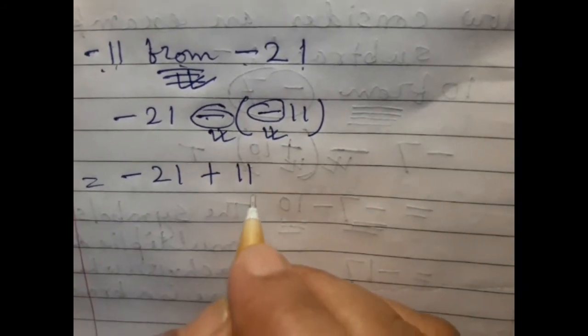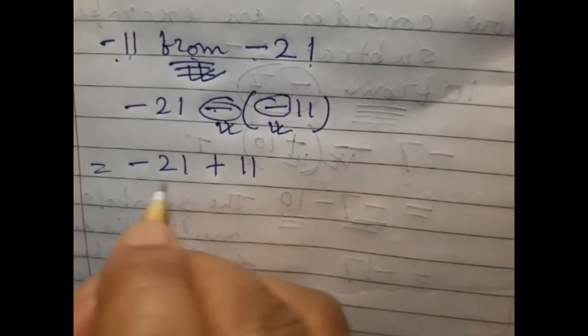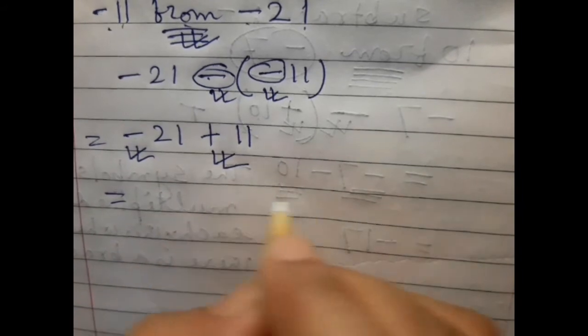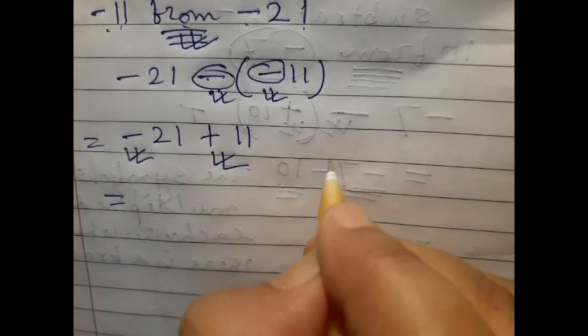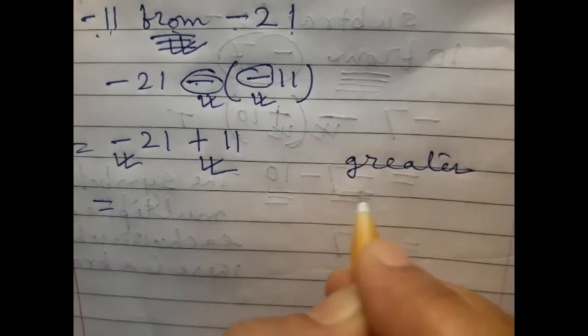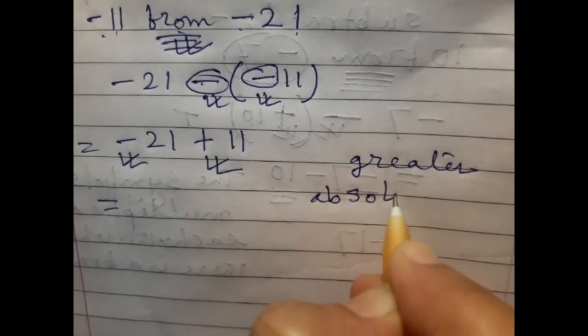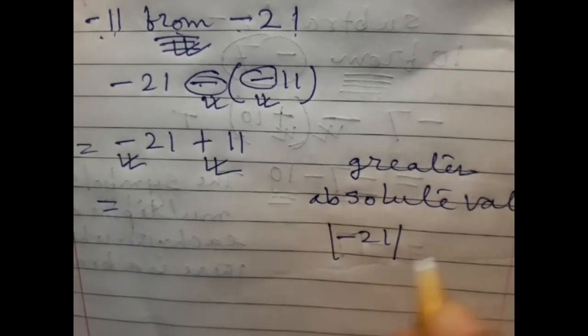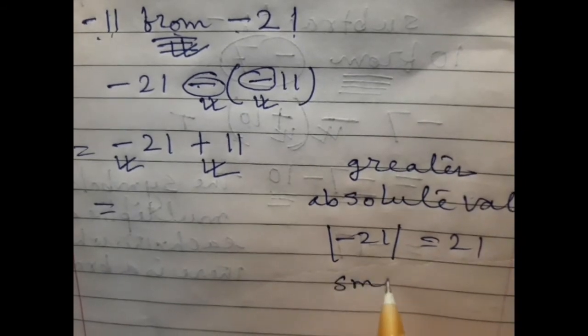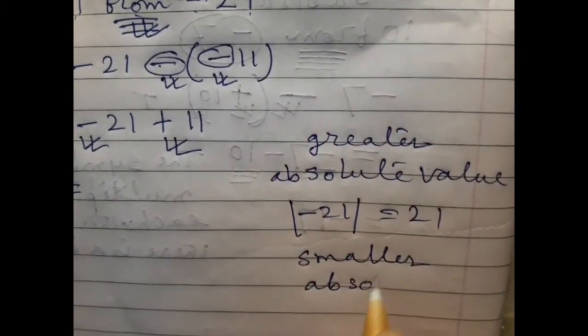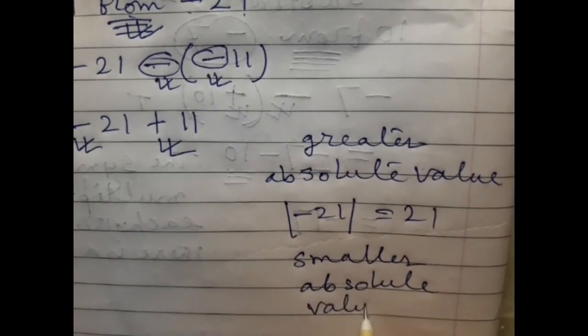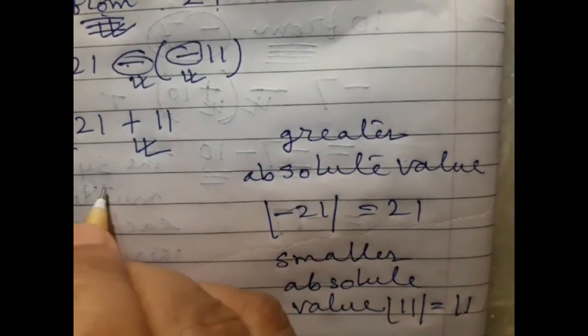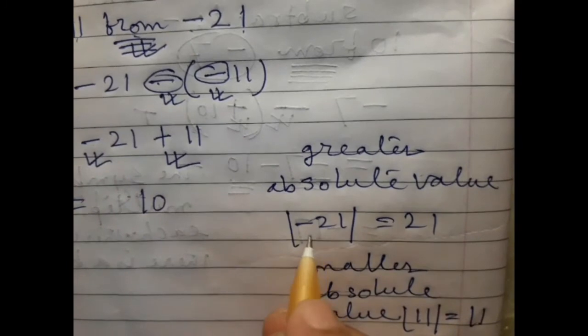And there is two different signs between two integers. This is minus and this is plus. So we subtract the absolute values. Greater absolute value is 21 and smaller value is 11. 21 minus 11 equals 10. What will be the prefix? Minus.